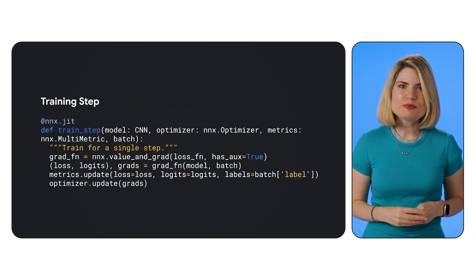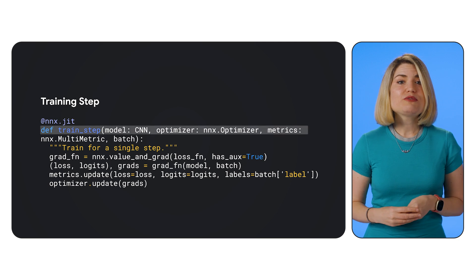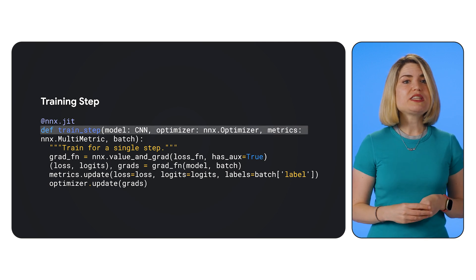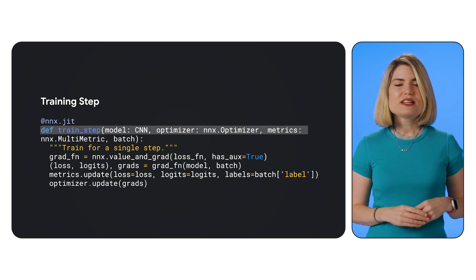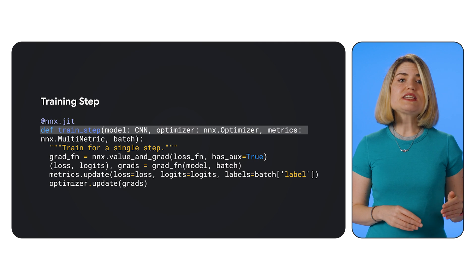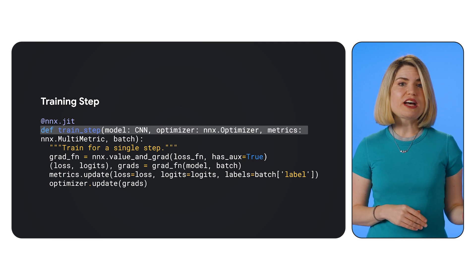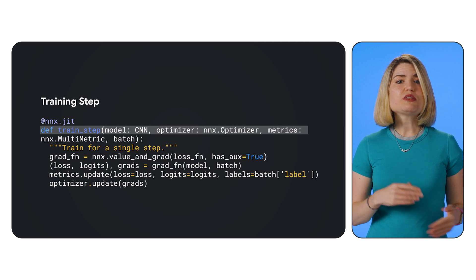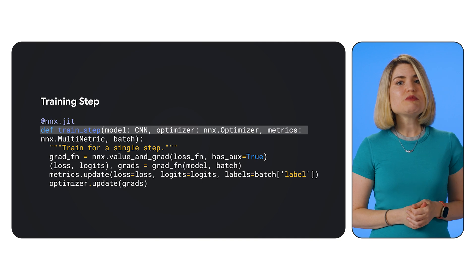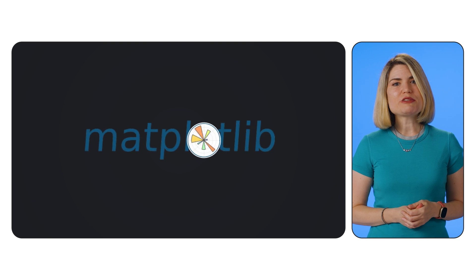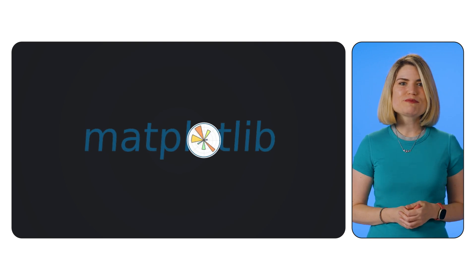Now for the training loop. We define a train step function decorated with NNX.JIT for optimized performance. Inside, we calculate the loss using NNX value and grad, update the model's parameters with optimizer.update, and keep track of all of our metrics. After training, we evaluate our model on a test set and visualize the results using matplotlib to see how our model performed.